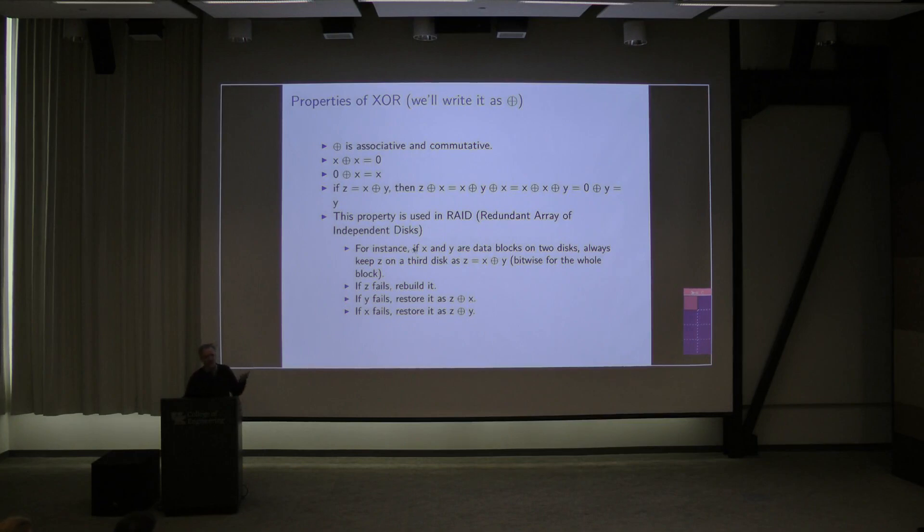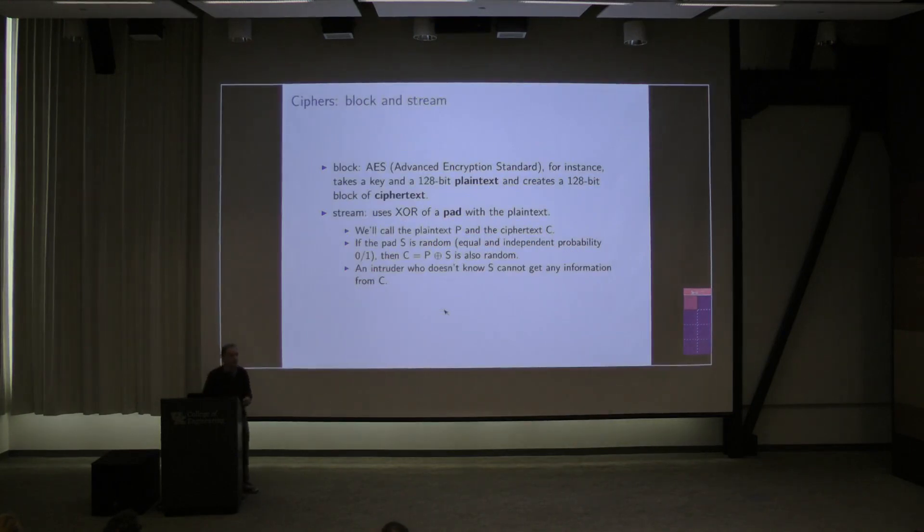A few other important properties: any X, whether it's 0 or 1, or with X gives you 0, and 0 exclusive or with any X gives you X back. These are basic mathematical properties. So if you've got X exclusive or Y, let's call that Z. Then what happens if you take Z and exclusive or with X? You get that Y through this set of algebra. I'll walk through it.